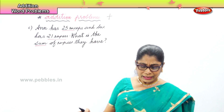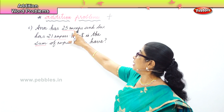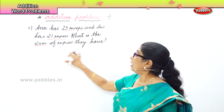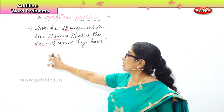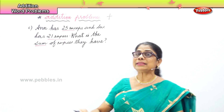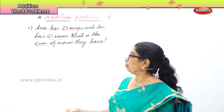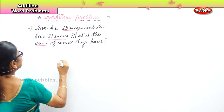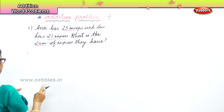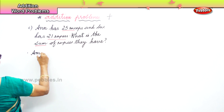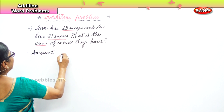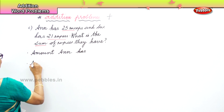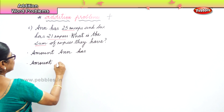You have three statements we need to write. Number one — the first statement: amount Anne has, 25 rupees. Next, amount Sue has, 21 rupees. Therefore, the total sum — the total amount they have together — we will find out.